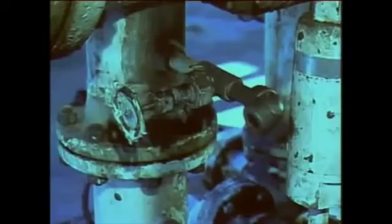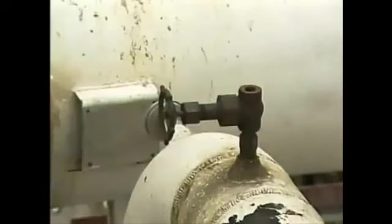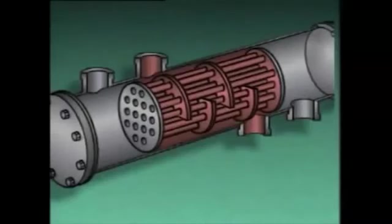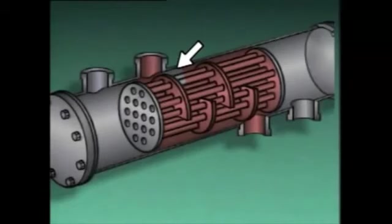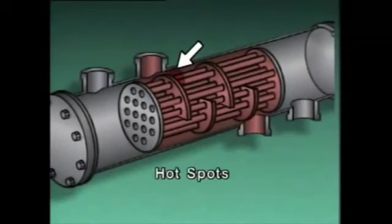Many heat exchangers also have drain valves. These valves are used to remove fluid from the heat exchanger when the unit is shut down. Vent valves are also found on heat exchangers. Vent valves are used to remove air or other undesirable gases from heat exchangers. If pockets of air or gas are trapped inside the unit, they can prevent process fluids from coming into contact with some of the tubes. When this happens, the heat exchanger won't be able to transfer heat properly. These pockets reduce the heat exchanger's efficiency and can produce hot spots.